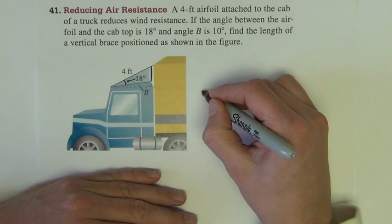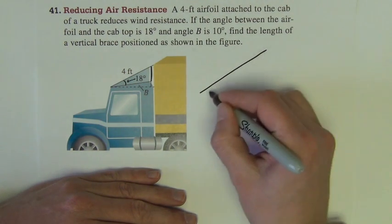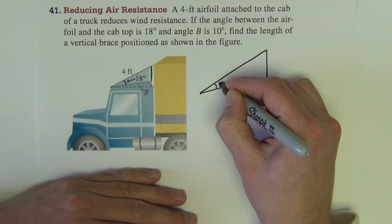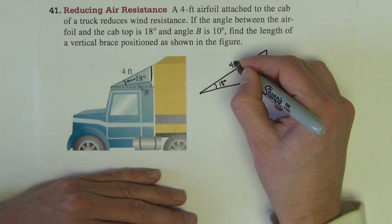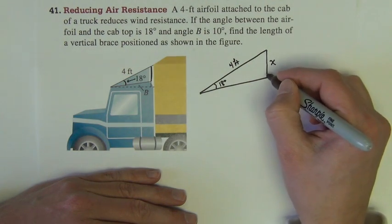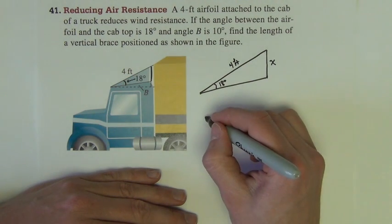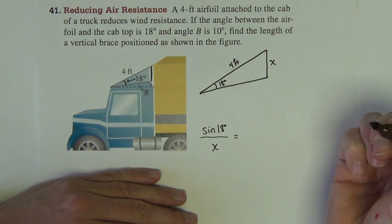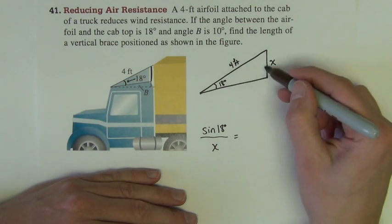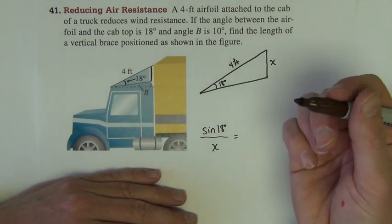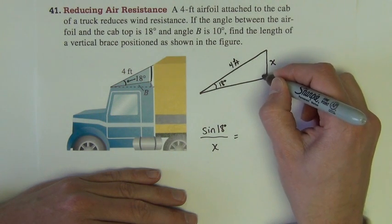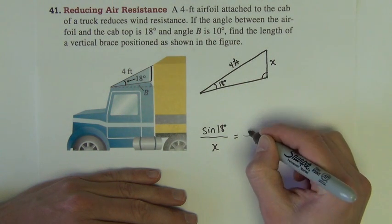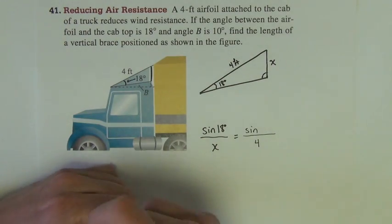Let's just redraw this, maybe a little bit bigger. So, this is 18 degrees. This is 4 feet. This is what we're trying to find. So, let's see. We've got, then, sine of 18 degrees over x equal to... I'm just setting up my law of sines and those two are across from each other. Equal to... What I need is this one, right there, because I want something over 4. So, I've got to figure out what that is. And to figure out what that is, I believe this is where we're going to use that 10 degree value.